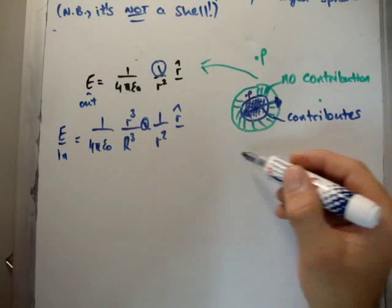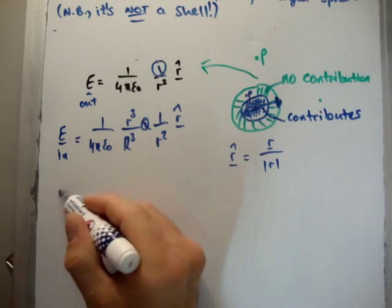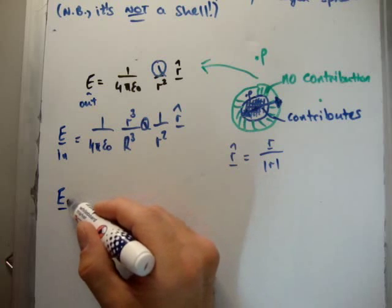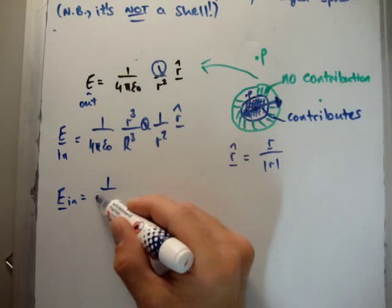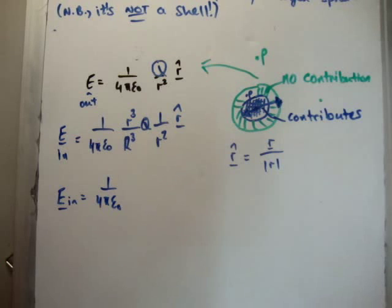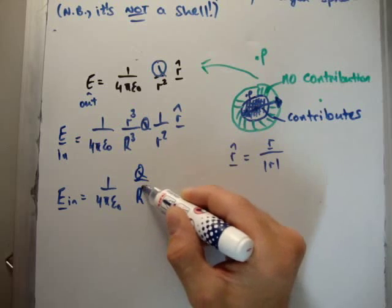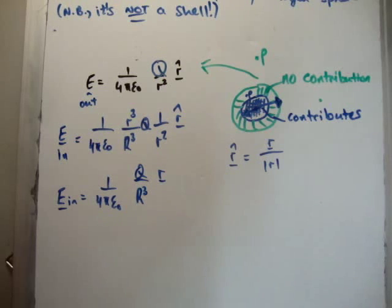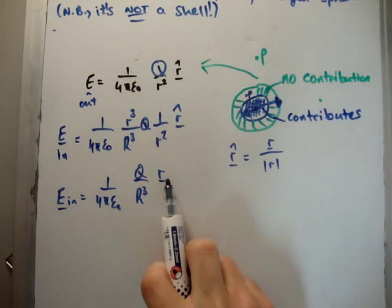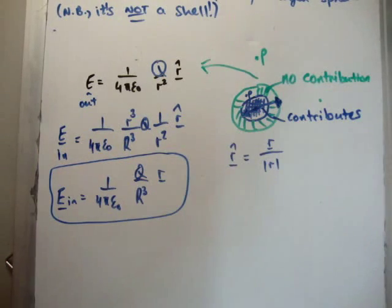Note, of course, that r hat is equal to r divided by the magnitude of r. So, if you want, we can write this in a way that I don't particularly like doing, but I'm going to write it anyway, because you'll probably see this yourself. That you can write it as 1 over 4 pi epsilon 0, capital Q over r cubed r. And this isn't a unit vector. This is actually the direction vector of the field itself.